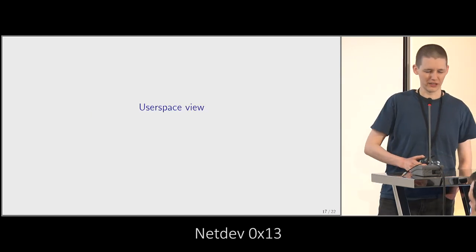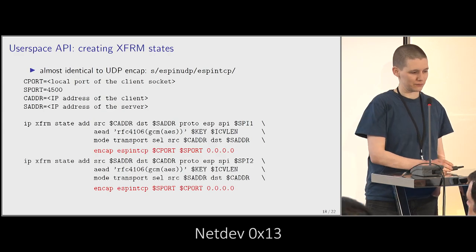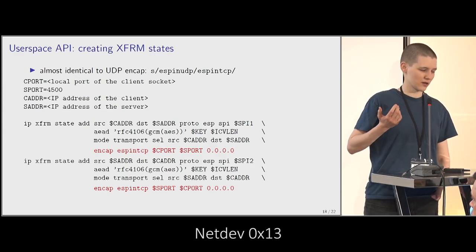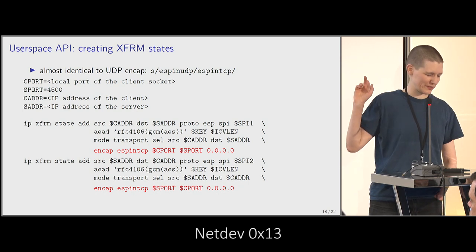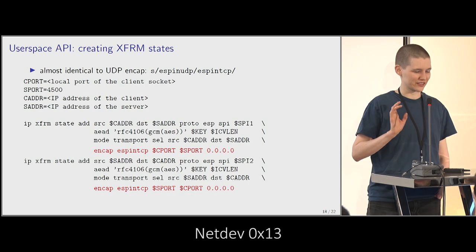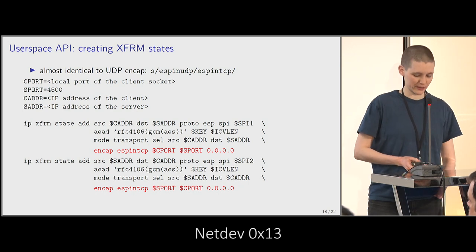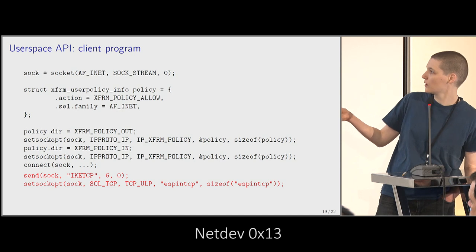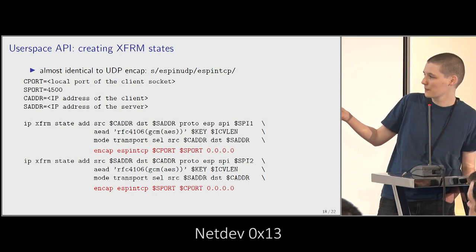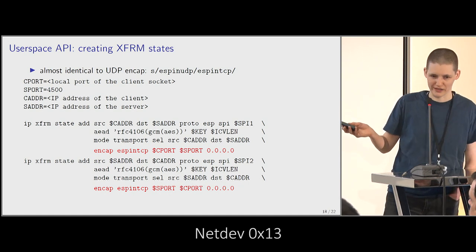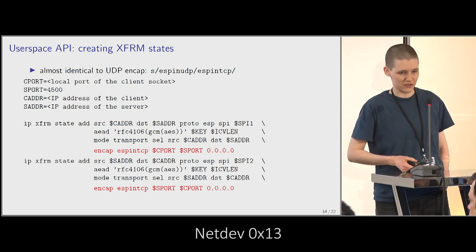What does ESP and TCP look like from a userspace point of view? There are two components. One is creating the XFRM states. I'm a kernel person so I use ip xfrm; userspace people probably use Netlink directly with the ENCAP option. But essentially it's the same as UDP encapsulation, just replacing UDP with ESP-over-TCP instead. You create your XFRM states with the ESP and TCP encapsulation — and that's pretty much it.